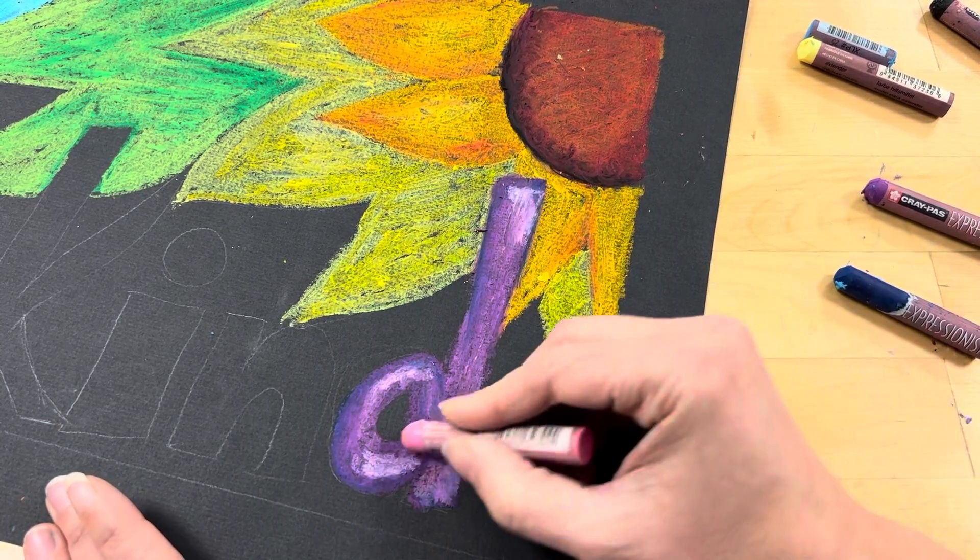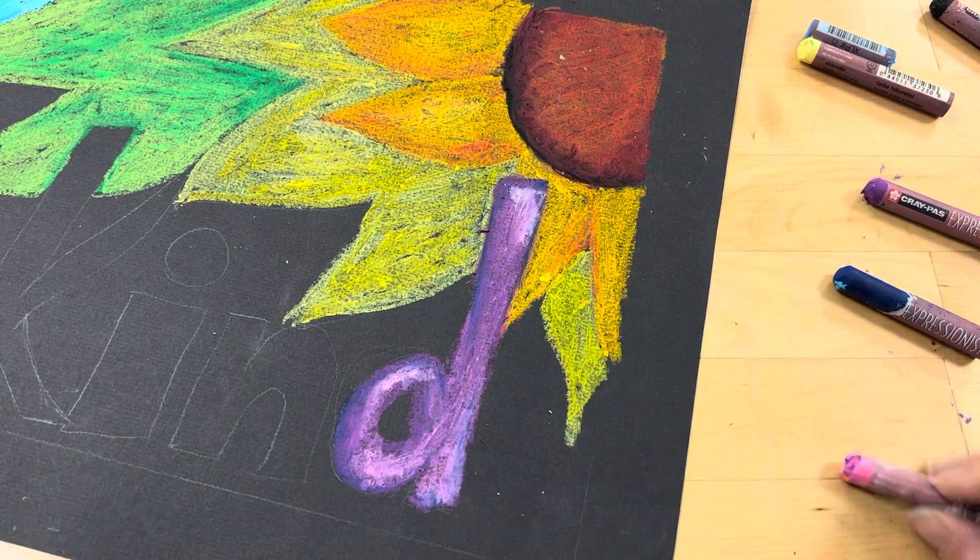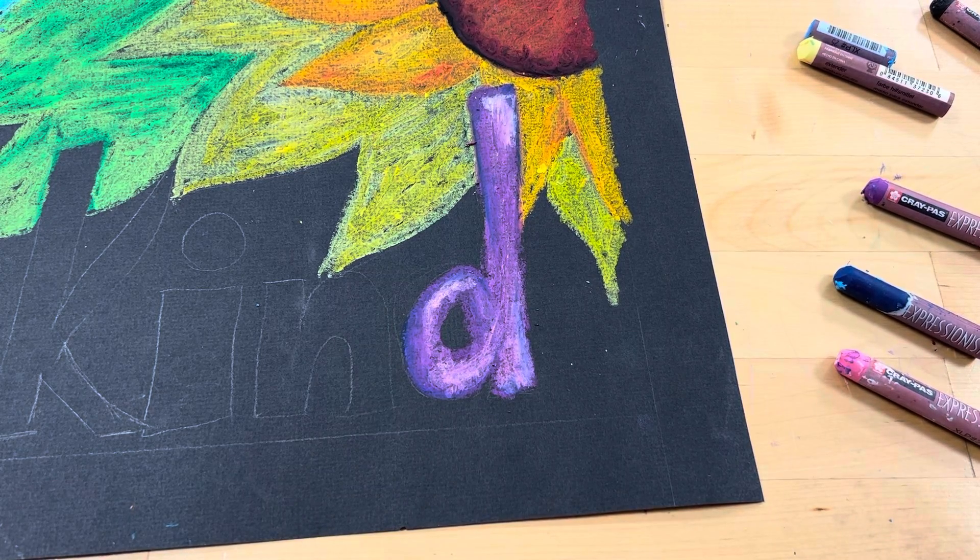So you can see I'm just going back and forth, back and forth, back and forth. And there we go. So you can see how our letters are really going to pop off now off the background.